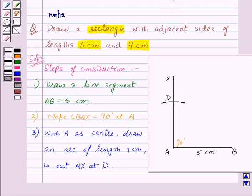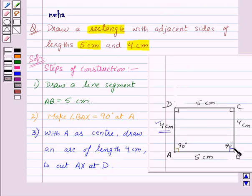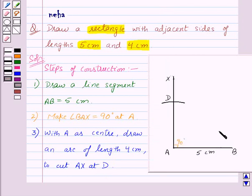Now again, we know that angle B is 90 degrees. So we will draw an angle of 90 degrees at point B.